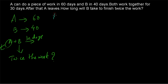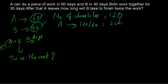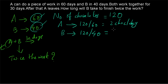Using the chocolate approach, the total number of chocolates equals the work to be finished, and the number of chocolates should equal the LCM of 60 and 40. The LCM of 60 and 40 is 120. A is taking 60 days to finish the work, so A will have 120 divided by 60 equals 2 chocolates per day. B will have 120 divided by 40 equals 3 chocolates per day. So A and B together consume 5 chocolates per day.